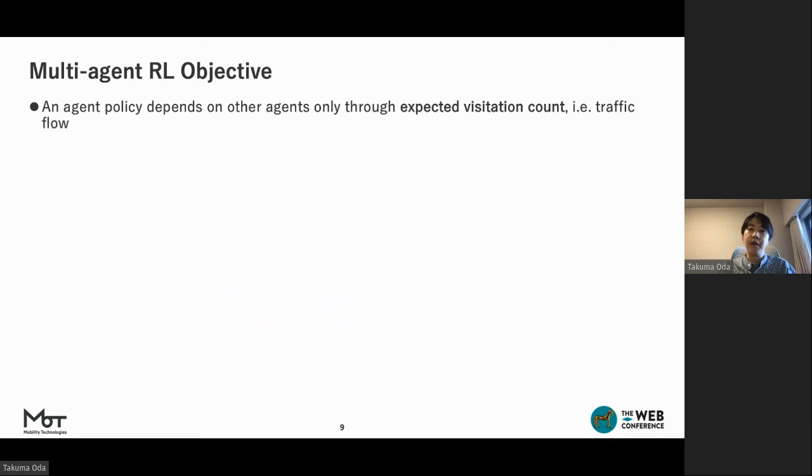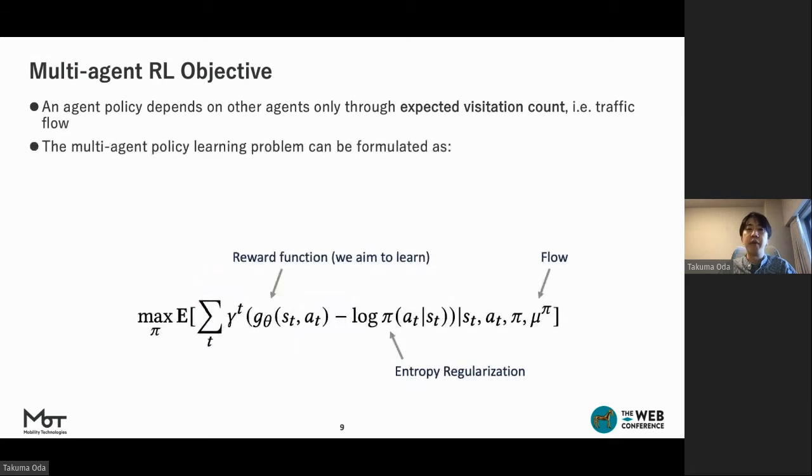Now we can formulate the multi-agent policy learning problem as the following RL problem. Here, the first term is instant reward function, denoted as G, and the second term is entropy regularization. Only the flow condition differs from the single-agent maximum entropy IRL.